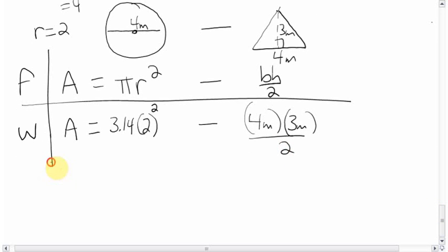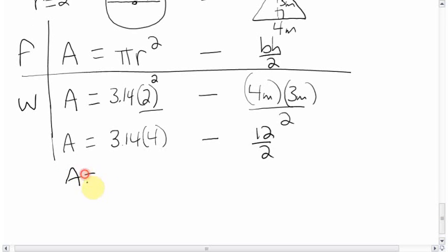The next step: remember with areas of circles, you do BEDMAS first, the exponents first. This, which is 2 squared, 2 times 2, which is 4. So it will be 3.14 times 4. And over here, 4 times 3, which is 12, divided by 2. Next step: pi times 4 is 12.56, and 12 divided by 2, which is 6. We're ready to figure out what the answer is.